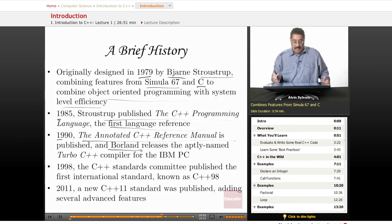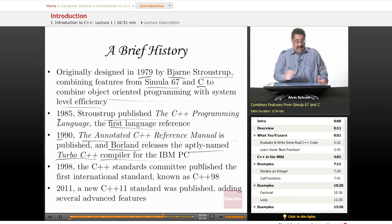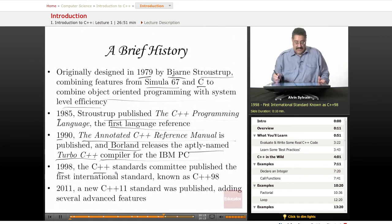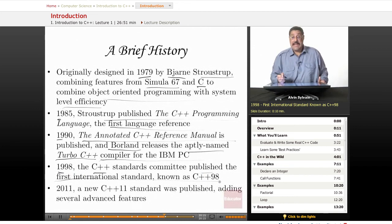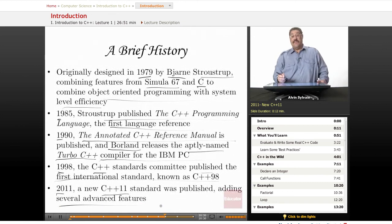And Borland, a company created, you may have seen that with Turbo C++. You may have seen it with Turbo C, with Delphi, a bunch of other wonderful little programs. It's aptly named Turbo C++ compiler for the IBM PC. It was aptly named because that compiler was fast, let me tell you. In 1998, the C++ Standards Committee published the first international standard known as C++98. And now, in 2011, a new C++11 standard was published, which added several advanced features, which we're not going to cover in this class because this is an introductory class.